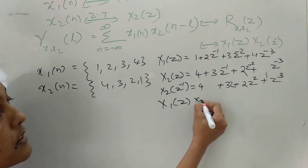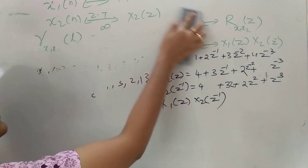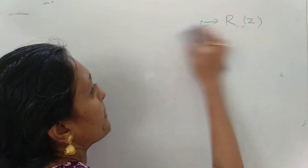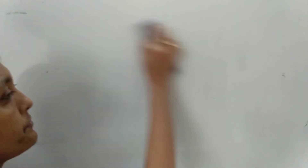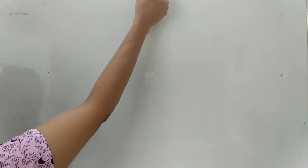When multiplying, you can do the polynomial multiplication and write the series result. This is the correlation. Now we also have some simple theorems: the Initial Value Theorem and the Final Value Theorem.